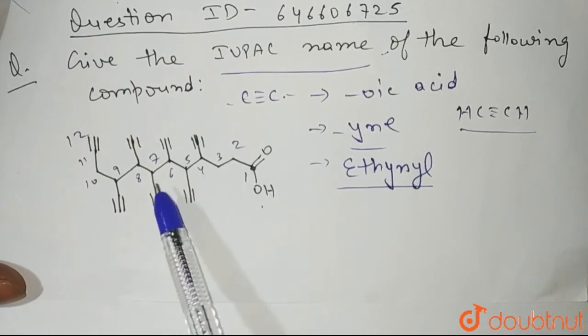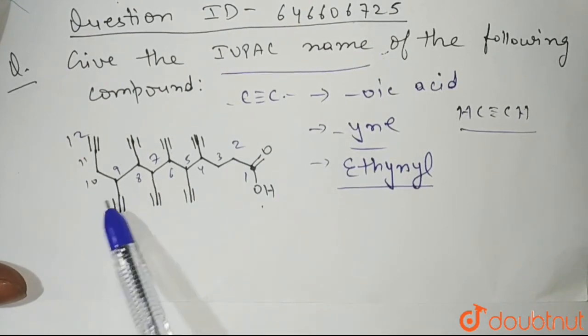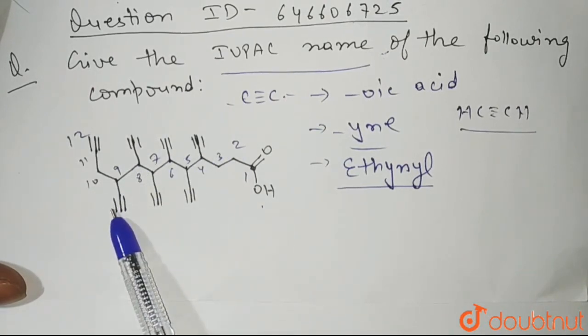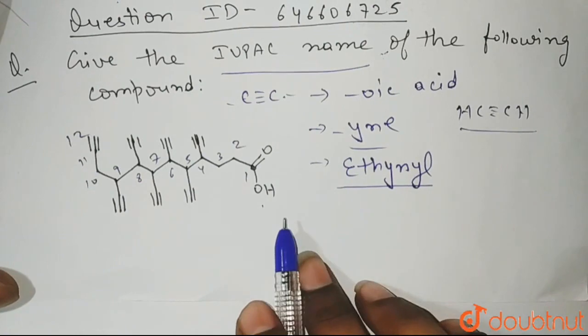And at carbon number 4, 5, 6, 7, 8, and 9, we have ethynyl groups present as the substituents, alright? So let's write the name of this compound.